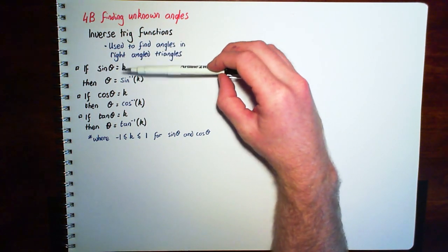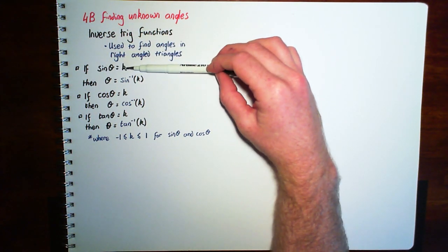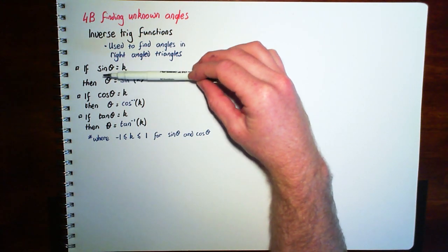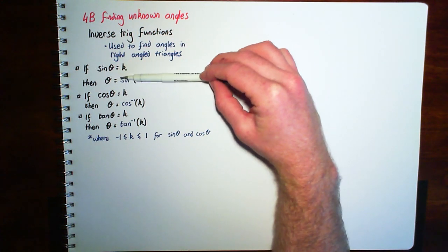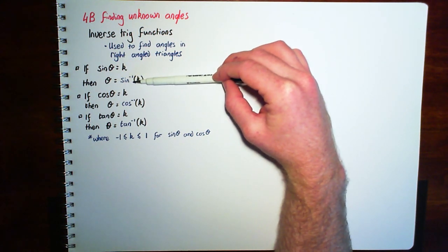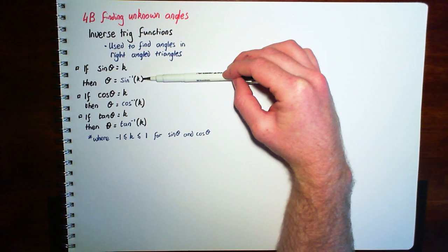For example, if we have sine of theta equals some number, then our angle theta is going to be the inverse sine, and it's indicated by this minus one, so sine to the minus one of that number.